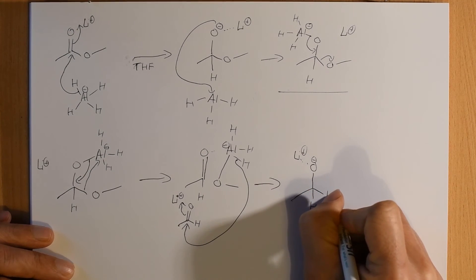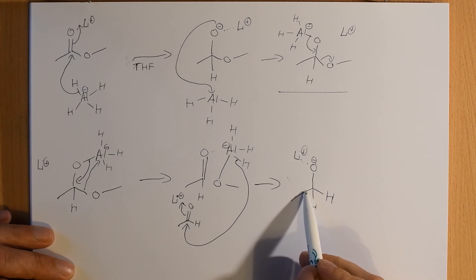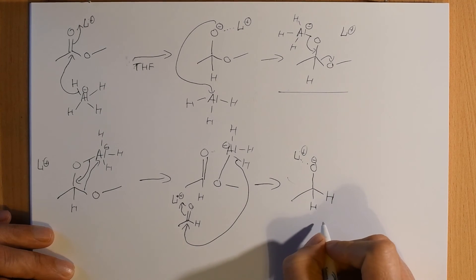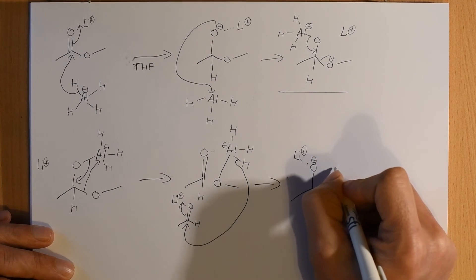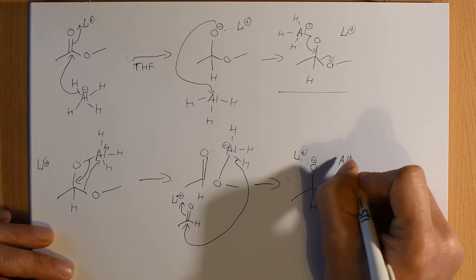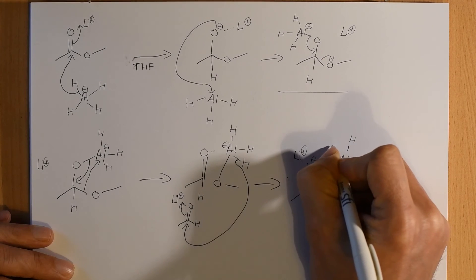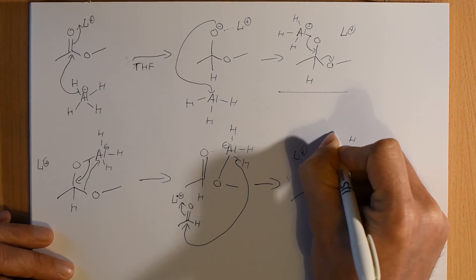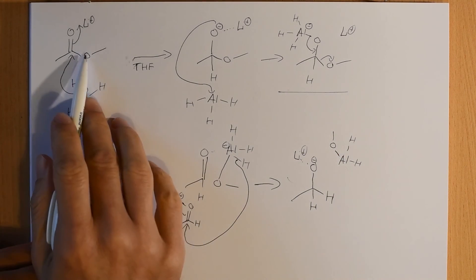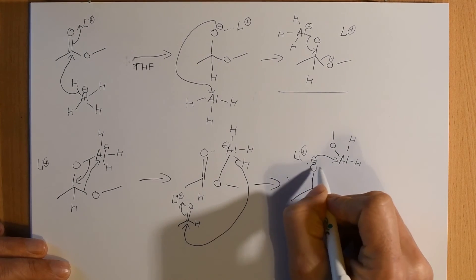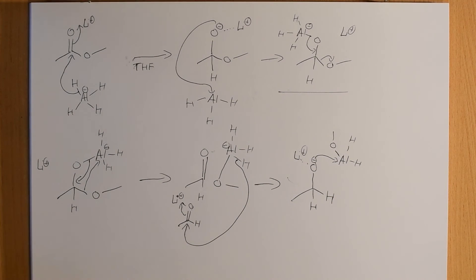So now we've produced or we've nearly produced our primary alcohol we also have our aluminum which now only has two hydrogens still attached still has the methoxy and again as with up here this is going to coordinate in favor of an ionic bond with the lithium.